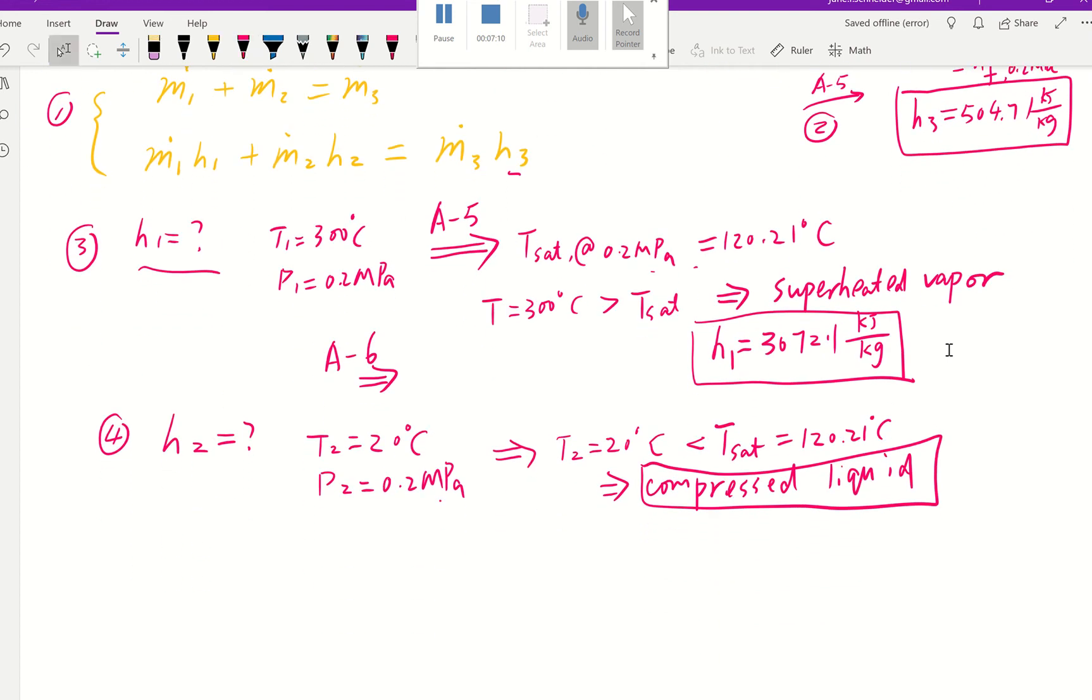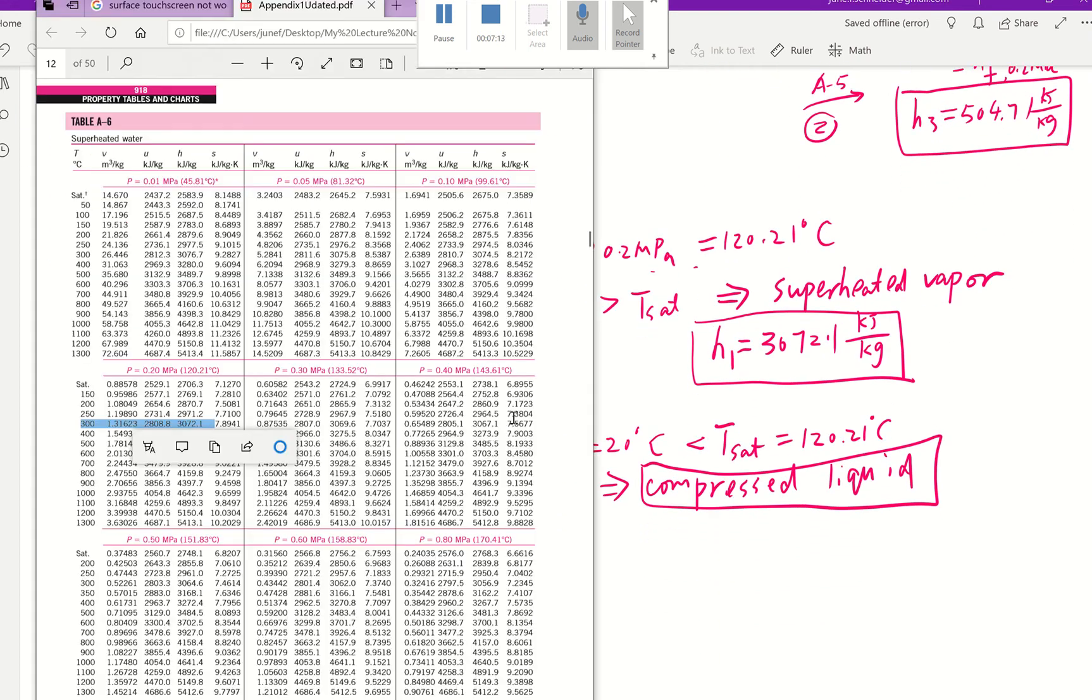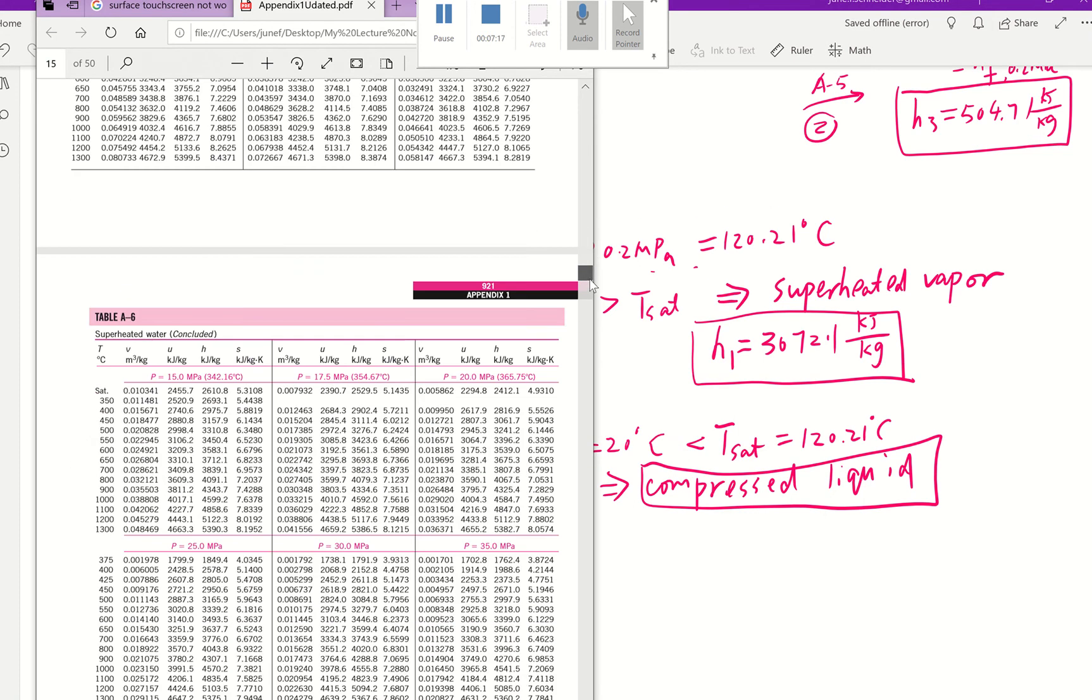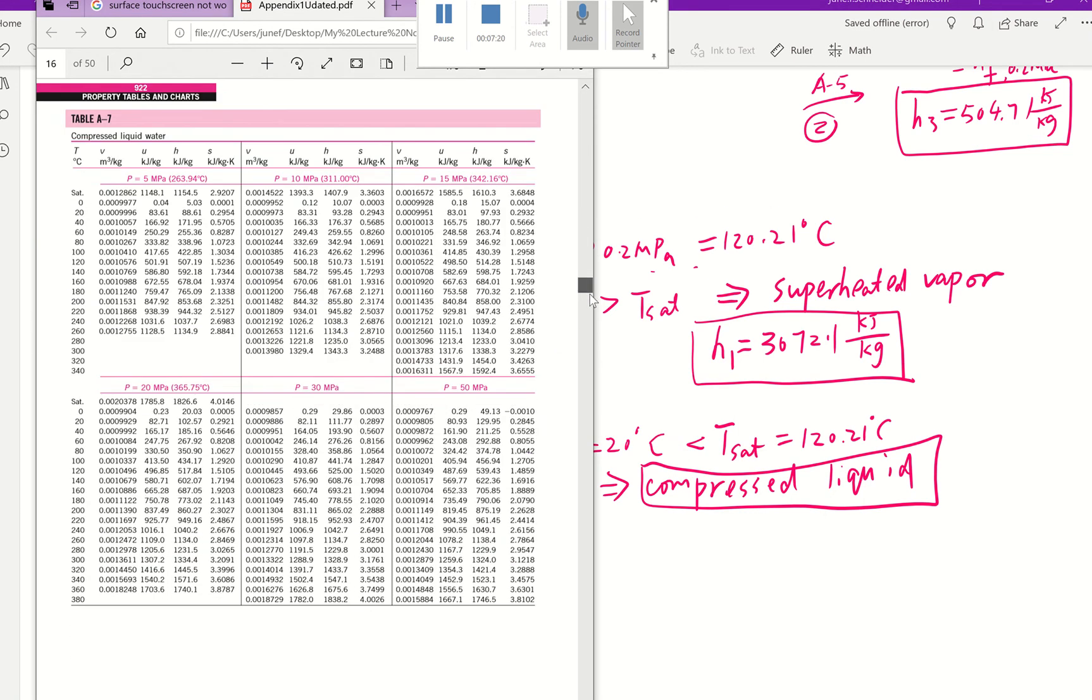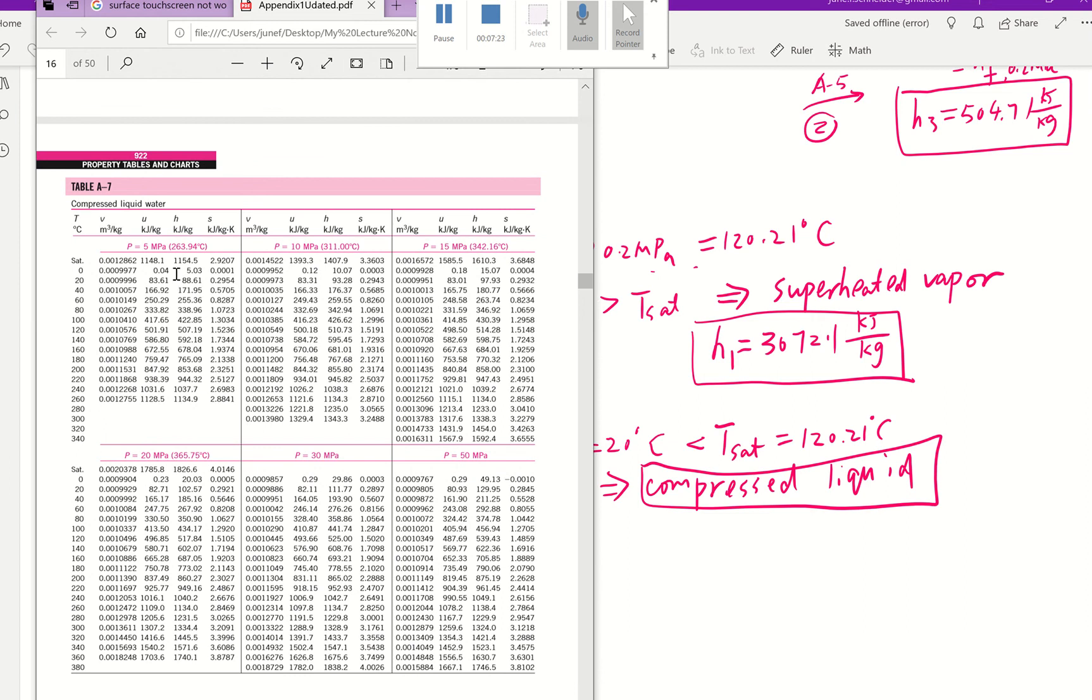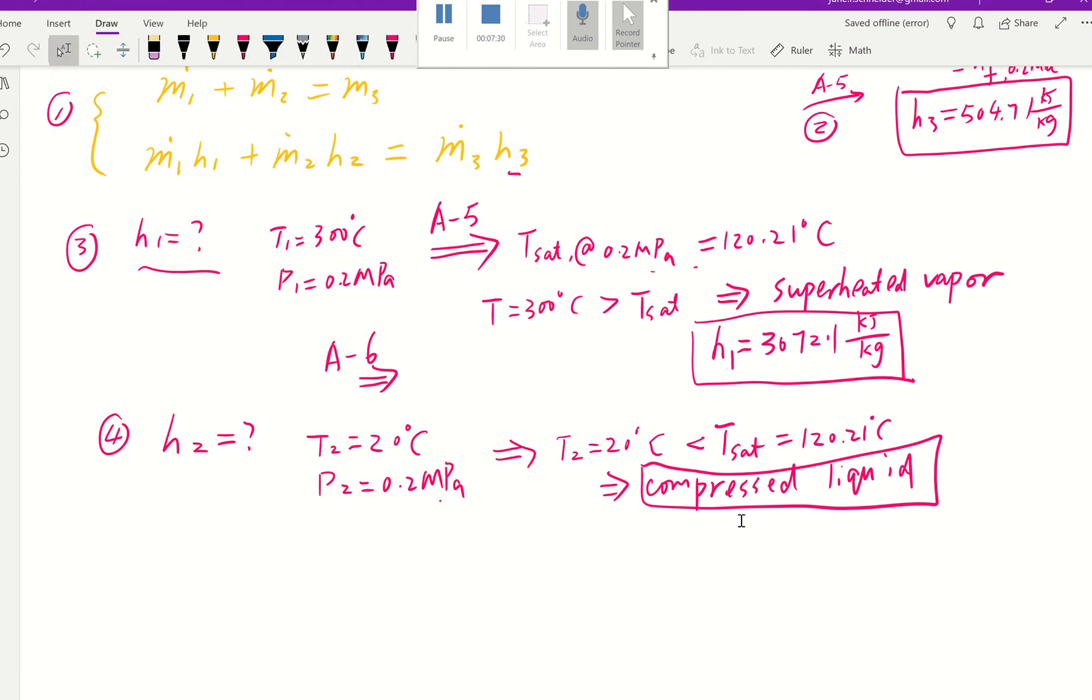So if it is compressed liquid, we normally go to the compressed liquid table, that's table A-7. But we run into a dilemma: the lowest pressure they have there is 5 MPa and our pressure is 0.2 MPa. So remember when we encounter this, what do we normally have to do? We have to approximate because this is compressed liquid. So we're going to find our h₂ approximately using saturated liquid at the same temperature, 20°C. That's how we approximate.